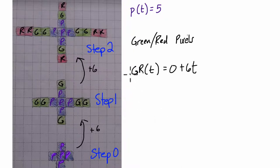Now, altogether, if we look at all the pixels, the total pixels, we can say, okay, well, there's the 5 purple plus all the green and all the red. So if we put those two together, we have 5 plus 0, we can leave that 0 out, plus 6t, and this equals the total pixels as a function of time.